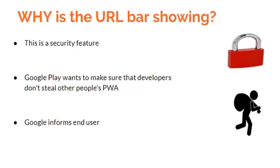That's why the URL bar is there. If the content is not yours, the users must know it. However, if the Android developer can prove that the progressive web app he is wrapping up in his application actually belongs to him, then there is no problem — it's possible to get rid of the URL bar.